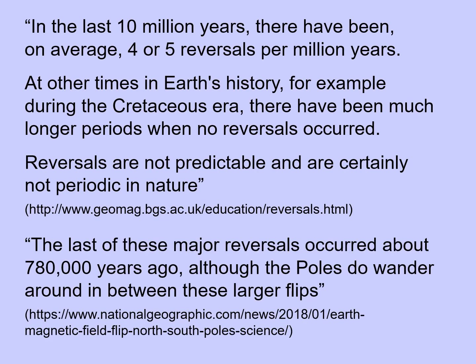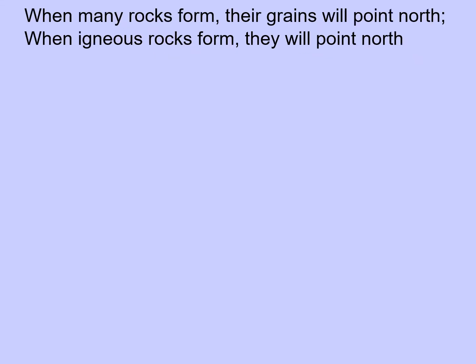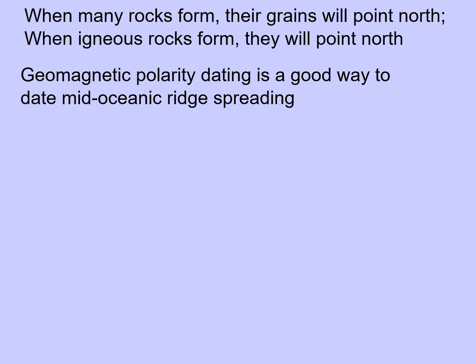The last major reversal occurred about 780,000 years ago. Although we haven't had a polarity reversal since then, the poles do wander around in between these larger flips. When many rocks form, their grains will point north — for example, when igneous rocks form and the lava cools, the grain of the hardening rock will point north. So geomagnetic polarity dating is a good way to date mid-oceanic ridge spreading, for example.